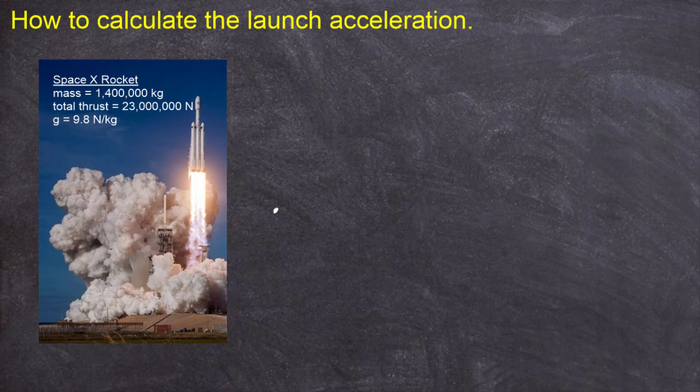And the first force acting on the rocket we're told is the thrust of the rocket, which we represent by that vector there. The thrust is the force which is going to be pushing the rocket upwards. Now the other vertical force acting on the rocket is the rocket's weight. And that is due to the force of gravity pulling down on the mass of the rocket. And the weight force vector is pointing downwards.